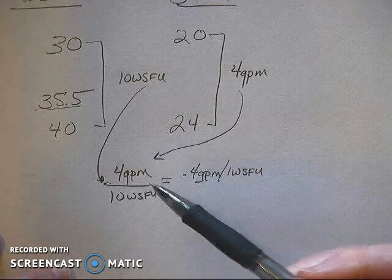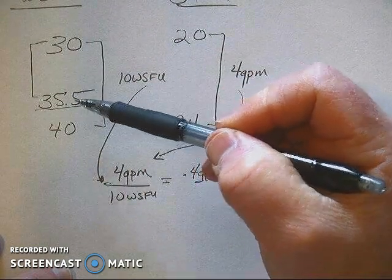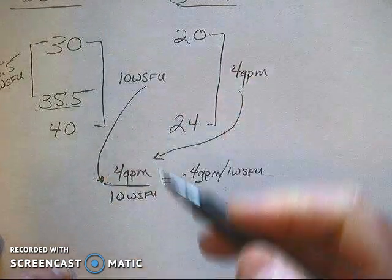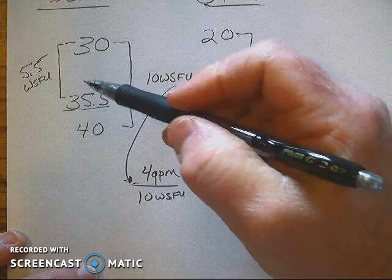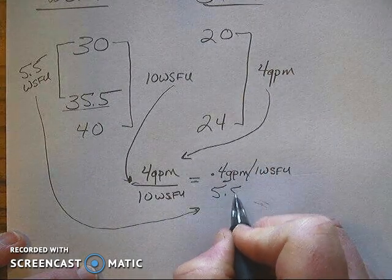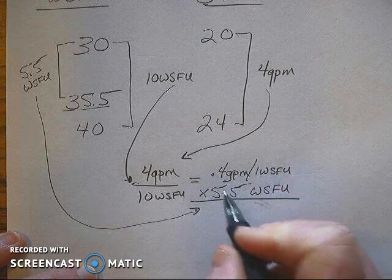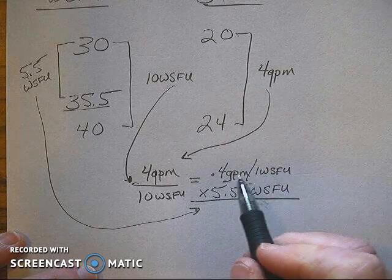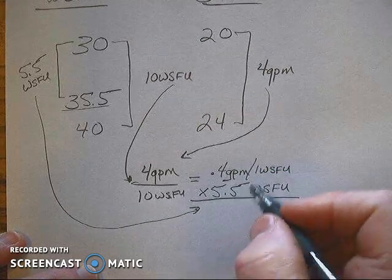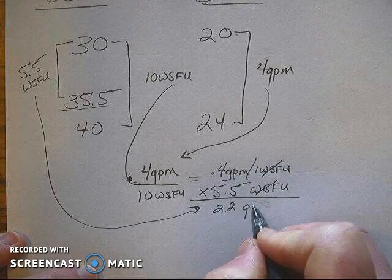Now when we look at our example we are looking for 35.5, and 35.5 WSFU is 5.5 WSFU more than 30 WSFU. With that said I'm going to take the 5.5 and bring it down over here and write that down, 5.5 WSFU. Now I'm going to multiply the 0.4 GPM per 1 WSFU times the 5.5 WSFU. When I multiply that out I'm going to get 2.2 and my WSFU is going to cancel out and my label will be in GPMs.